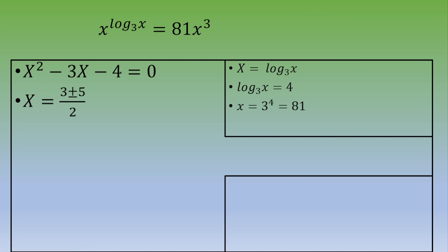Second root: if capital X equals 3 minus 5, this is minus 2 divided by 2, and this is minus 1. Once again, we're going to use the same formula. We end up with 3 to the power of negative 1, which is 1 third.